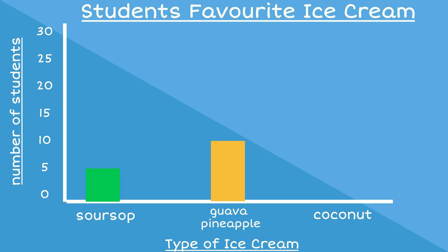She checks to see how many students chose coconut flavored ice cream. Twenty students chose this flavor, so she draws her last bar to meet the number twenty on the vertical column. Now that the bar graph has been completed, can you tell which ice cream flavor was the least popular? If you guessed soursop, then you are correct.